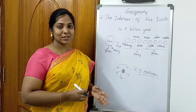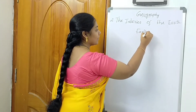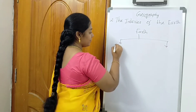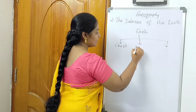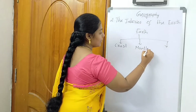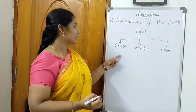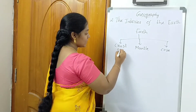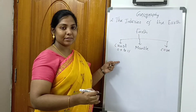A scientist called R.D. Holdam is the one who found out that the earth has different layers. The earth is having three different layers. The first one is crust, the second one is mantle, and the third one is core. The crust is the outermost layer of the earth and this is the thinnest of all the layers, occupying 0.5 to 1 percent of the earth's volume.